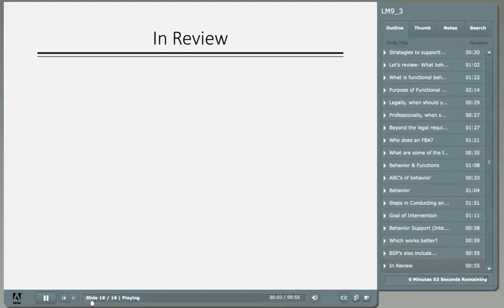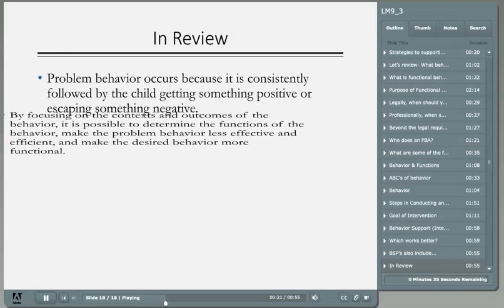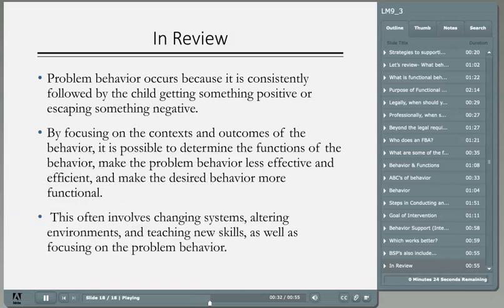In review: we write an FBA so that we can define the behavior in a way that everyone who supports the child would know what it looks like, why the behavior happens, and what to do when it does happen. The behavior support plan specifies a plan so that everyone working with a child knows how to respond and how to support and teach the replacement behavior. The behavior continues to occur because it's reinforced. Our goal is to make challenging behavior less effective and less efficient, and instead make the replacement or desired behavior more functional.